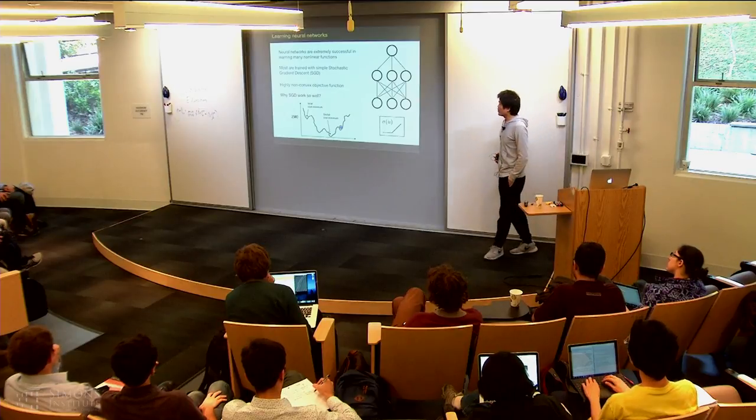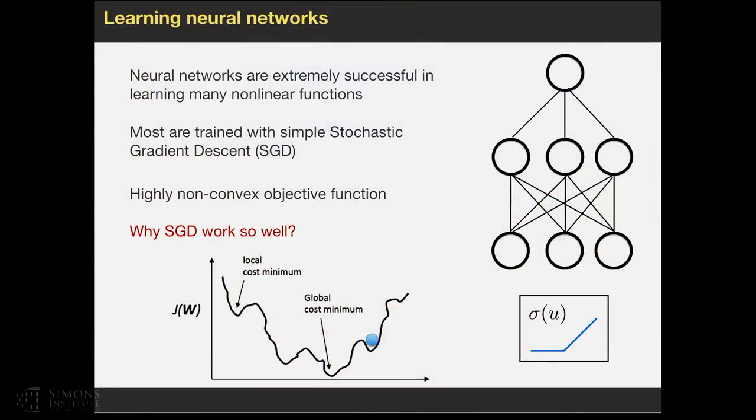As we know, neural networks are very successful in learning many non-linear functions and have wide applications in computer vision and natural language processing. Most neural networks are trained with simple stochastic gradient descent; however, the objective function is highly non-linear, highly non-convex with possibly numerous local optima and saddle points. So the intriguing problem we're going to ask is, why in practice does SGD work so well to train neural networks?